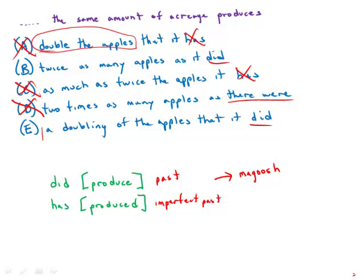E, we have the awkward phrase doubling of the apples, which is unclear. And then we get to the pronoun it. Now, in the other ones, it clearly refers, as it should, to the same amount of acreage. But when we have doubling of the apples, that it, then it seems like the it should refer to doubling of the apples. And that makes no sense whatsoever. So, that's out.